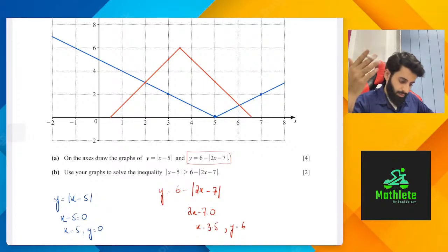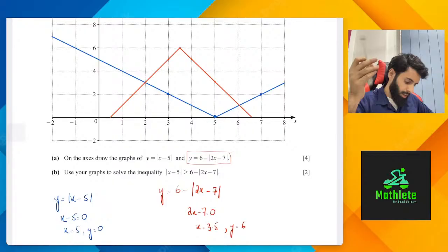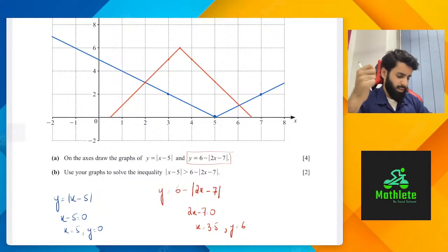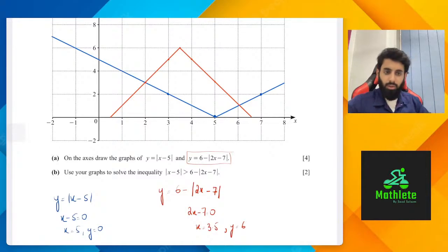How did you get 5 when 4 was plugged in? So if you plug in 4: 2 times 5 is 10, 10 minus 7 — wait, did I get 5 or something else? Maybe it's not 5. Yeah, of course — when you plug in 4, you get 5. Okay, so plug in 4, you get 5.